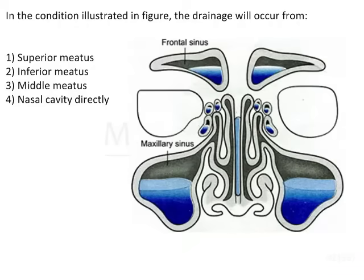The question is, in the given condition illustrated in the figure, the drainage will occur from where. We can see that this is the maxillary sinus, and usually all sinuses are filled with air and they have their own lining mucosa. However, in this sinus, you can see that there is some amount of fluid present up to a particular level, and this fluid has to be drained in a particular way so that only air is present in the sinus.